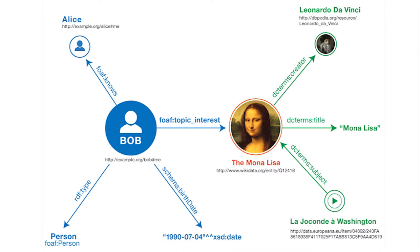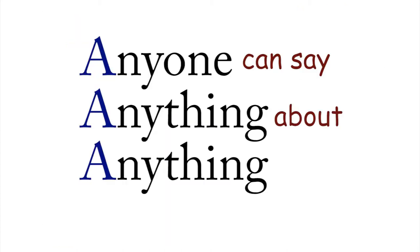People can actually extend each other's knowledge. An encyclopedia might say this was created by da Vinci, and then a company might say this customer is interested in the Mona Lisa, so maybe he's also interested in other products that relate to it. This shows that the RDF data model is very easily extensible — everybody can add an edge. This was called AAA, which stands for 'anybody can say anything about anything.' Complete freedom, as is ideally the case on the original web as well.